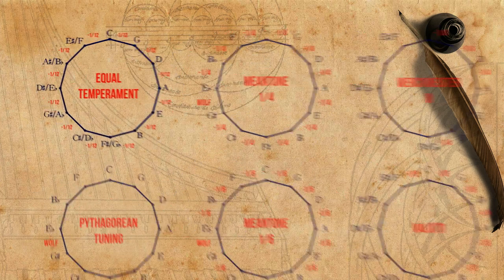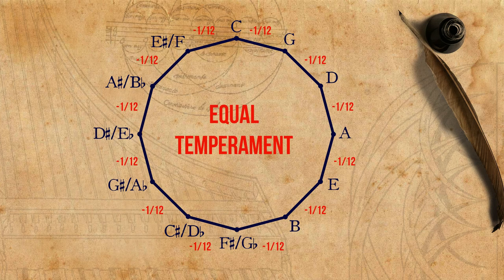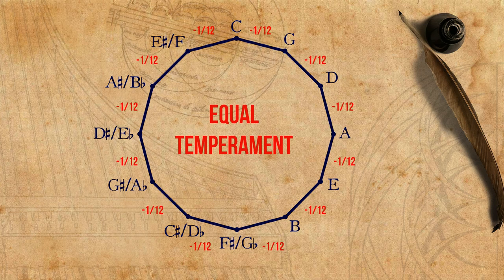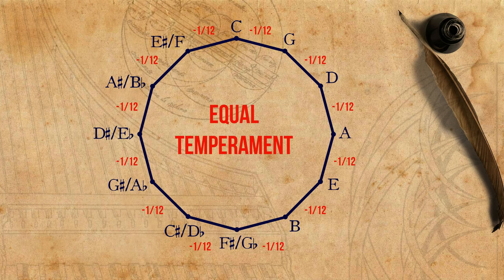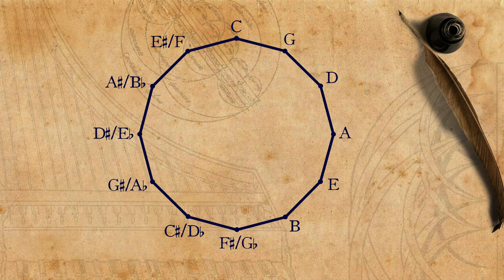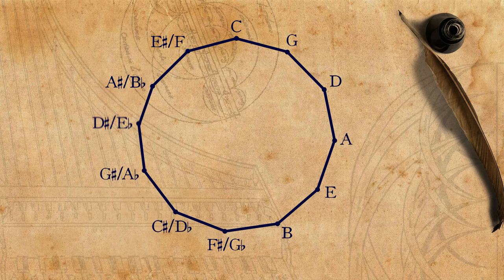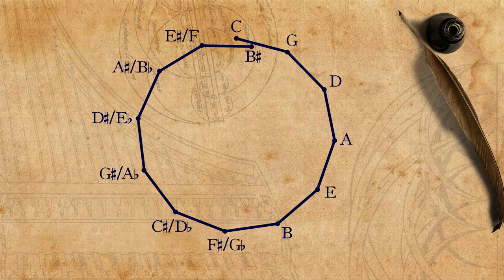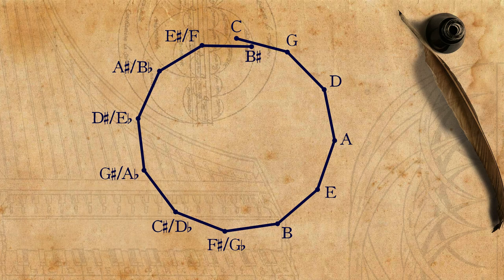In the case of equal temperament, each fifth must be tempered and become slightly smaller than pure. The reason is that if we build a temperament based solely on pure, untempered fifths, after a sequence of 12 fifths, mysteriously, we won't finish on the same note we started on. The circle won't close.